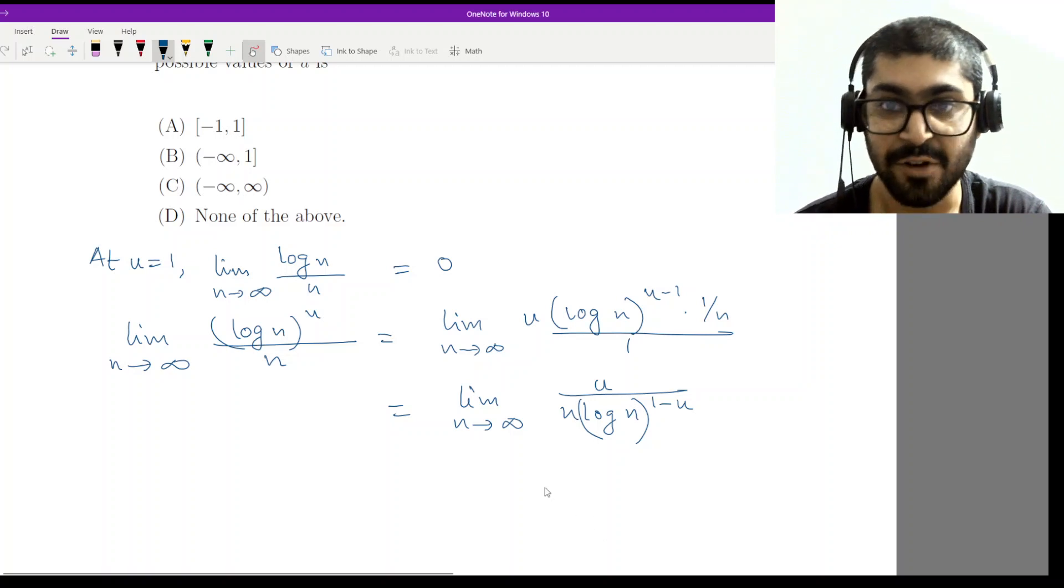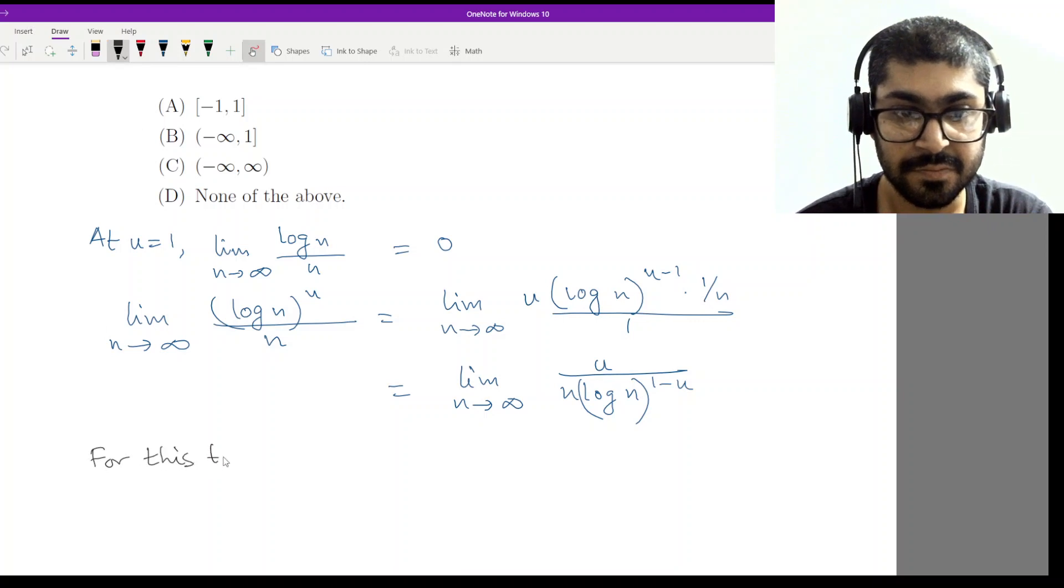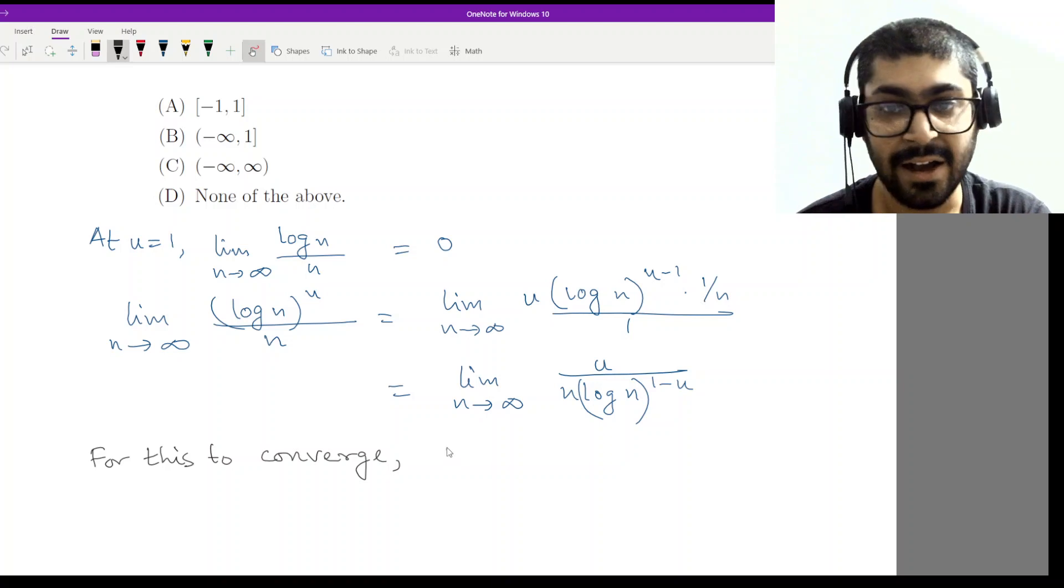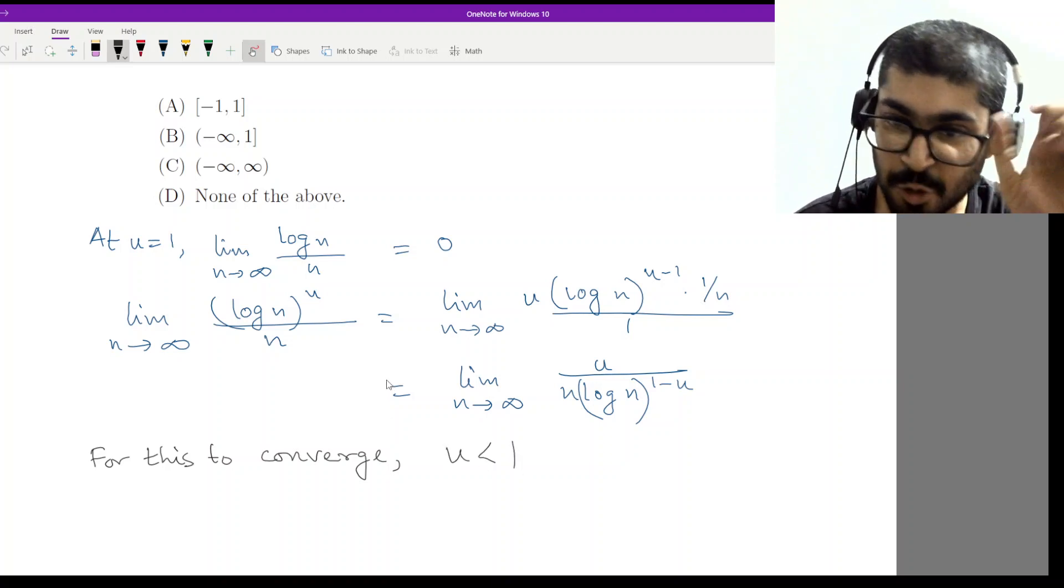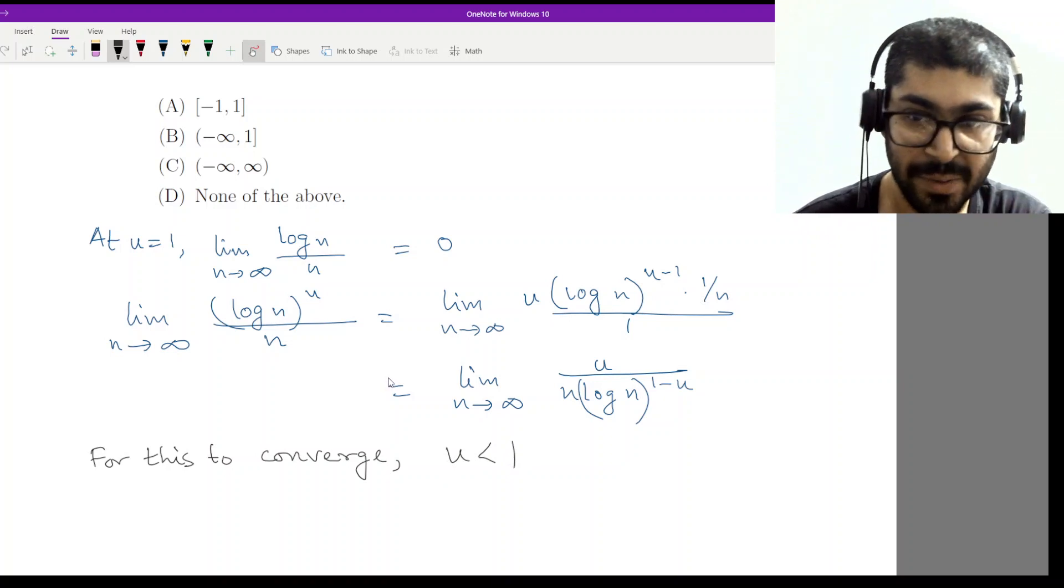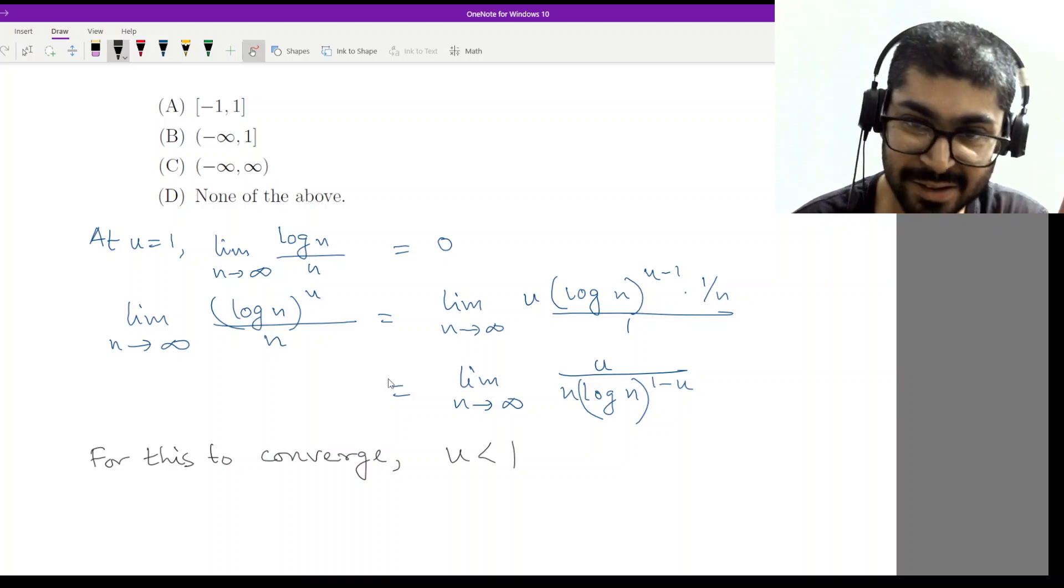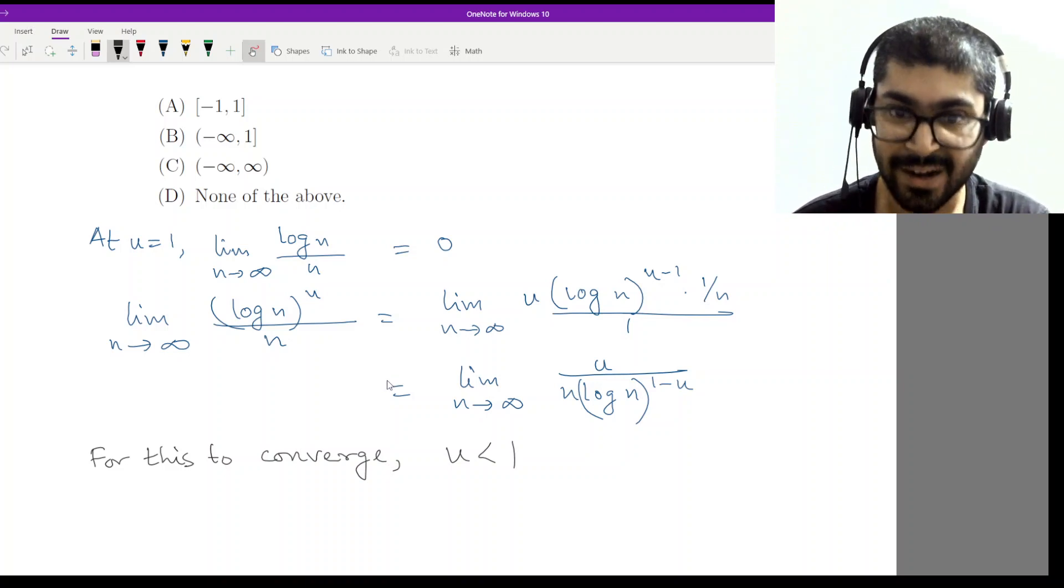I have u less than 1 because if u is less than 1, then you can see that the denominator will start increasing and it will overtake the numerator, and it will converge.